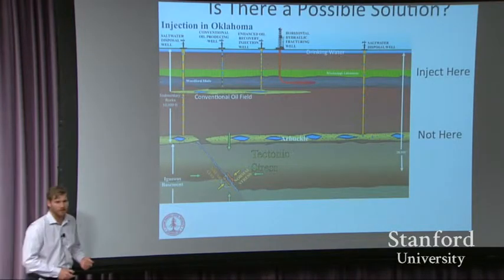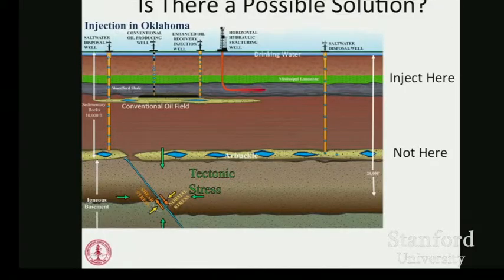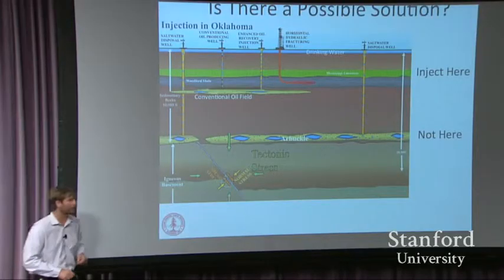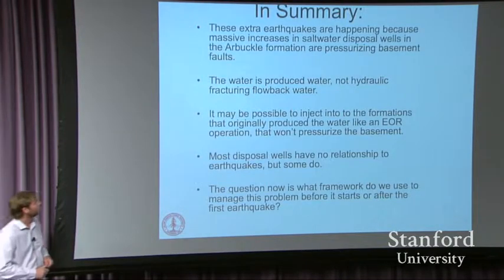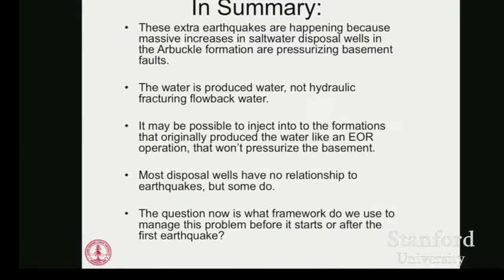Is there a possible solution? What we've told companies is that they should inject into shallower formations that they're already producing oil and gas from, creating a cyclical flow process, rather than injecting into the basal formations that are hydraulically close to the basement where fault slip can produce big earthquakes. In summary: these earthquakes are happening because we're pressurizing faults in the basement. The water is produced water, not hydraulic fracturing flowback water. There may be a technical solution — injecting into shallower formations — though we don't yet know for certain.